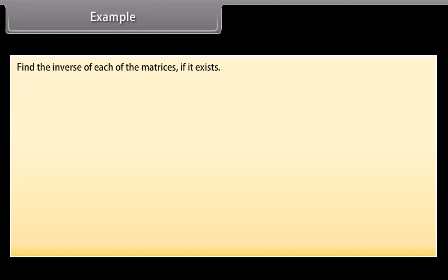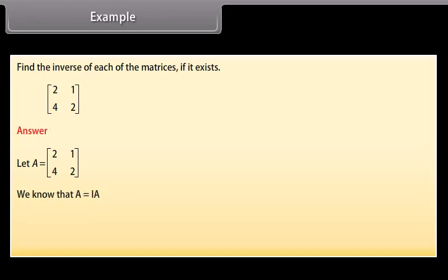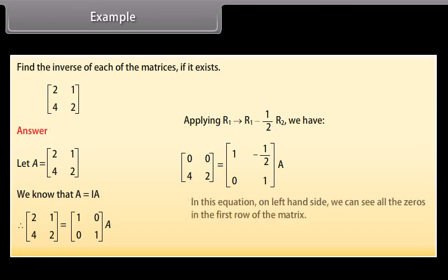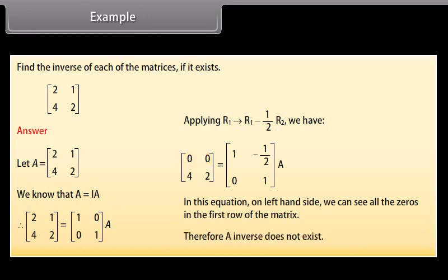Example: Find the inverse of the given matrix with rows [2, 1] and [4, 2]. Let the given matrix be A. We know A can be written as A = I·A. Applying R1 → R1 - (1/2)R2, we get the first row as [0, 0]. In this equation, the left-hand side has all zeros in the first row of the matrix. Therefore, A inverse does not exist.